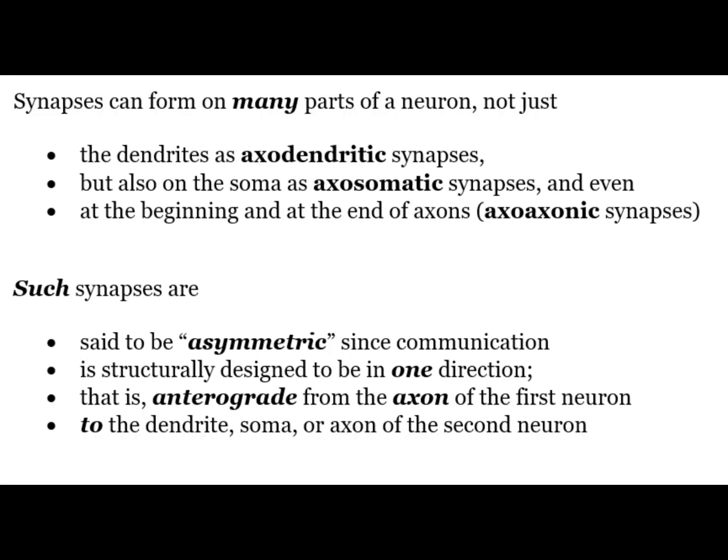Synapses can form on many parts of a neuron, not just the dendrites as exodendritic synapses, but also on the soma as exosomatic synapses and even at the beginning and at the ends of exons as exo-exonic synapses. Such synapses are said to be asymmetric since communication is structurally designed to be in one direction only.